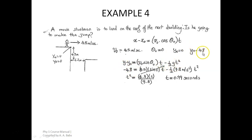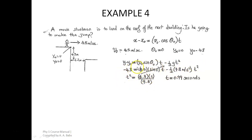y minus y₀ is minus 4.8, so we have minus 4.8 minus 0, which gives minus 4.8. Then 4.5 multiplied by sin(0) multiplied by t — since sin(0) is 0, that entire term disappears. We are left with minus 4.8 equals minus ½ × 9.8 × t². Making t² the subject and cross-multiplying gives t² equal to 4.8 × 2 divided by 9.8, and that gives t equal to 0.99 seconds. Note: g may be given as 9.8 or 10 m/s² depending on the problem.